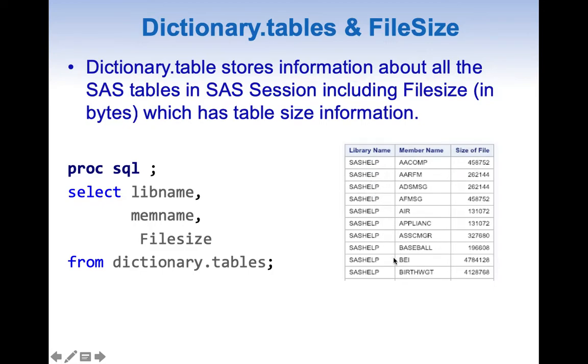Here if we see, the size of dataset is 458752 for AACOMP dataset and the size is in bytes.